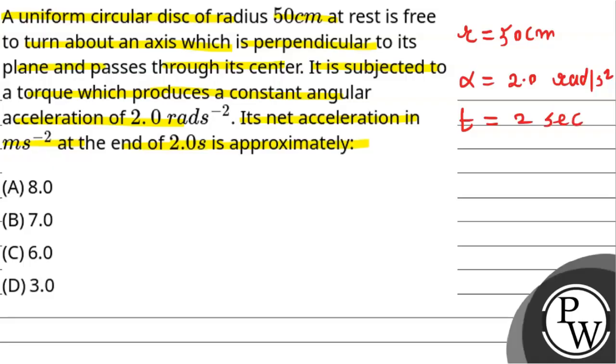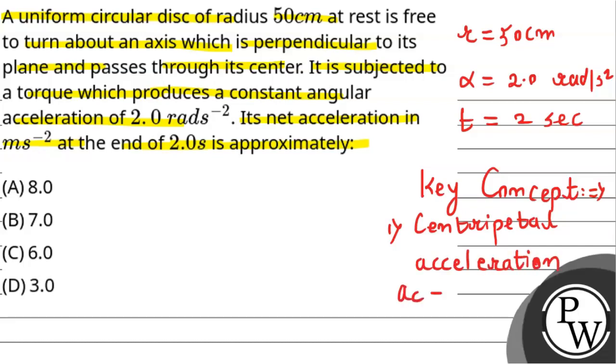Before starting the solution, let's talk about the key concept which we are going to use here. We will use the centripetal acceleration concept. The centripetal acceleration formula is ac equals r times omega square, where r is radius and omega is angular speed.